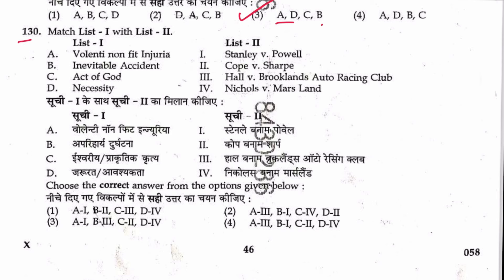Question 130: Match tort defences to cases. Volenti non fit injuria — Hall vs. Brooklands Auto Racing Club. Inevitable accident — Stanley vs. Powell. Act of God — Nichols vs. Marshland. Sequence is 3, 1, 4, 2. Answer is 2.